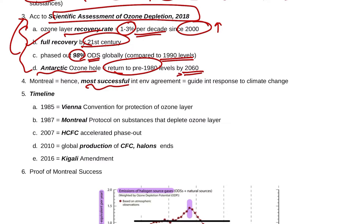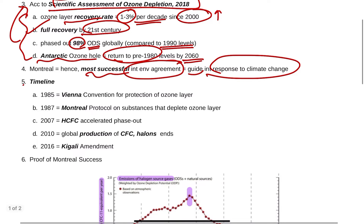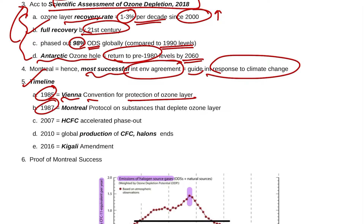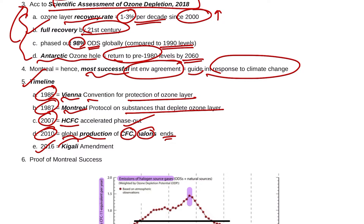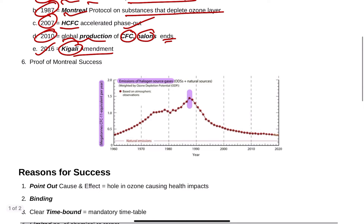The Montreal Protocol is the most successful international environmental agreement and must guide the international response to climate change as well. The timeline: 1985 — Vienna Convention for protection of the ozone layer; 1987 — Montreal Protocol on substances that deplete the ozone layer; 2007 — HCFC was acceleratedly phased out; 2009 — global production of CFCs, halogenes ceased; and 2016 — Kigali Amendment.